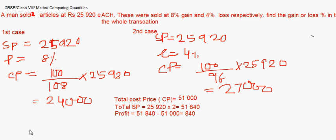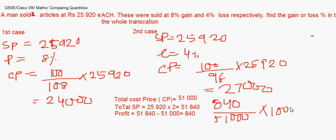We need to convert the profit into a percentage: profit percentage = (profit / total cost price) × 100 = 840/51000 × 100, which gives approximately 1.65%.